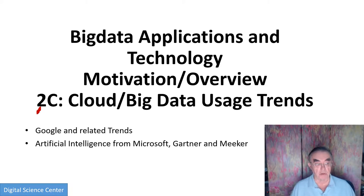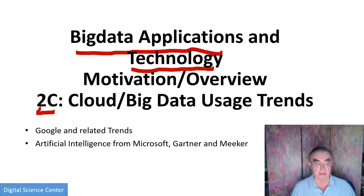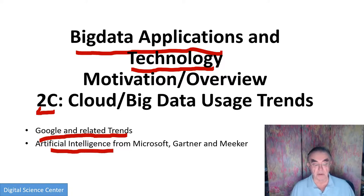Lesson 2C, Big Data Applications and Analytics slash Technology, Motivation and Overview talk. This is a little lesson on various items that didn't quite fit in the other lessons, discussing why the total dominance of clouds and big data exists in the technology world. We have some trend graphs from Google and related sources, and remarks on artificial intelligence from Microsoft on the global AI supercomputer, linking intelligent cloud to intelligent edge.